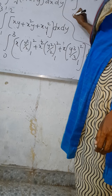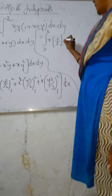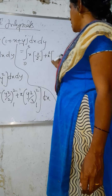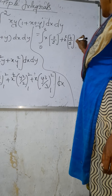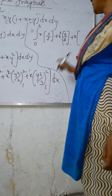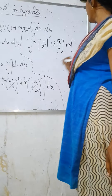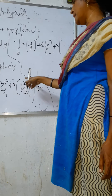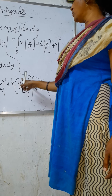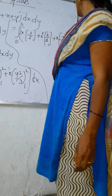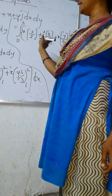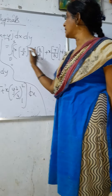Next, substituting the y limits: integral of 0 to 3 of x·(2² − 1² = 3)/2, plus x²·(4 − 1 = 3)/2, plus x·(2³ − 1³ = 8 − 1 = 7)/3 into dx.